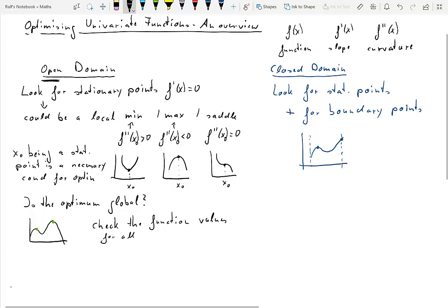What you got to do is you got to check the function values for all your stationary points and then just check which one is larger. So in this case, there would be that point that has a larger function value, so that would be the global maximum. And of course, similar considerations if you are looking for minima.